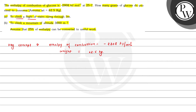We have to climb a flight of stairs rising 3 meters. We can calculate the potential energy, that is PE equals mgh. This equals number of moles multiplied by the enthalpy of combustion, 2808 kilojoule per mole, which is negative, and only 25 percent of enthalpy is converted into useful work, so we multiply by 25 divided by 100.